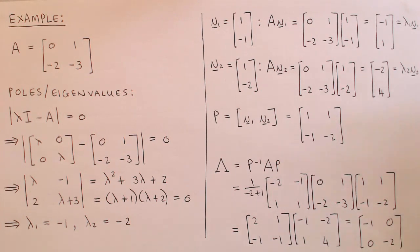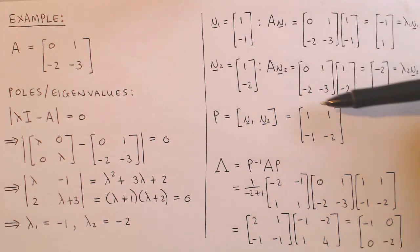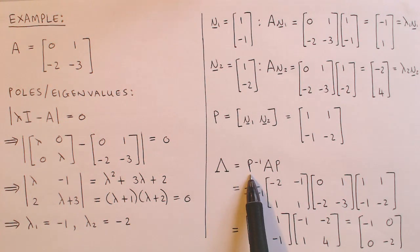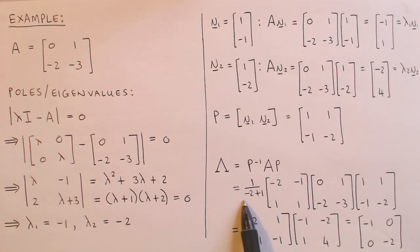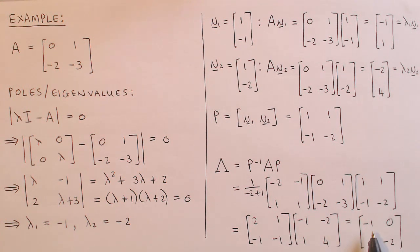Let's construct the transformation matrix P by inserting V1 as the first column and V2 as the second column. The transformed A matrix, capital lambda, is given by the inverse of P times A times P. The inverse of P is 1 over the determinant times the adjoint matrix. After multiplying out these matrices, we get capital lambda as a diagonal matrix with the poles minus one and minus two on the diagonal. The transformed state variable model is therefore in the modal canonical form, which is what we wanted.